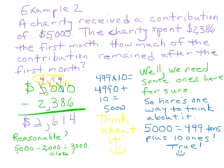In example two, a charity received a contribution of $5,000. The charity spent $2,386 the first month. How much of the contribution remained after that first month? We're going to subtract the money they spent from the money they received. We have our $5,000, and then right below it we write $2,386 — you can see how it's all nicely lined up. You also know we're going to be borrowing like crazy because there are three zeros.